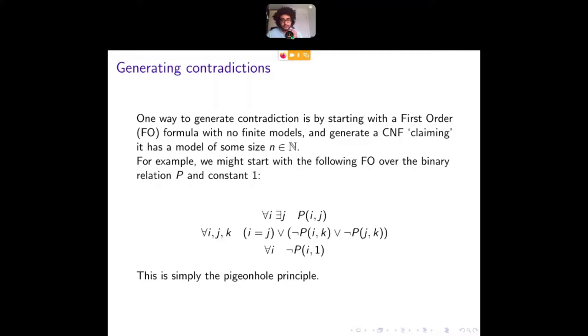So for example, this is the pigeonhole principle, for everything in the domain, there exists something, there exists like a hole that it goes into, and so on and so forth. This has infinite models, but it has no finite models. So this is the idea of what we're going for.